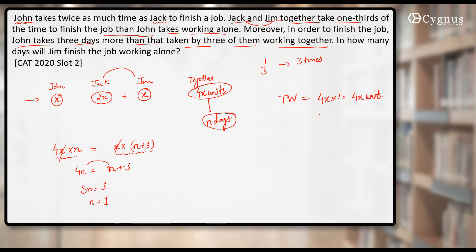Now what's the last line of question? He's asking that in how many days Jim finished the job working alone? What is one day's work of Jim? x units. And what's the total work? 4x. So days taken by Jim will be equal to work by his efficiency. That is equal to 4.